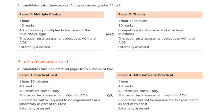For O Level paper three and four: paper three is alternative to practical, and paper four is the real practical test. The time for the real practical in O Level is one hour 30 minutes — about 15 minutes longer than IGCSE. Paper three (alternative to practical) is one hour, exactly like paper six in IGCSE.